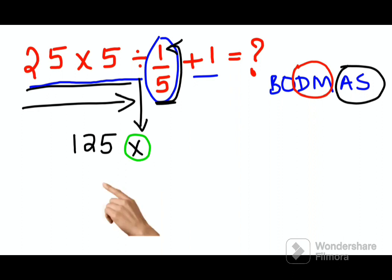So finally this becomes 125 into—sorry, 1 upon 5 becomes 5 upon 1—plus 1. So 125 into 5 will get you 625.